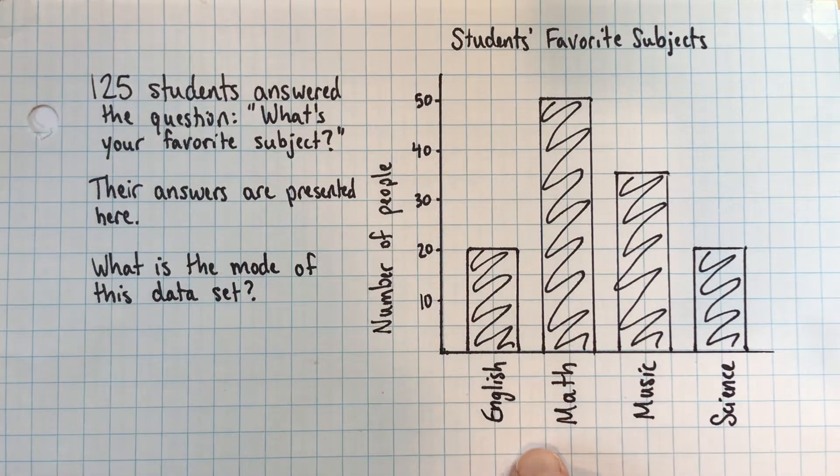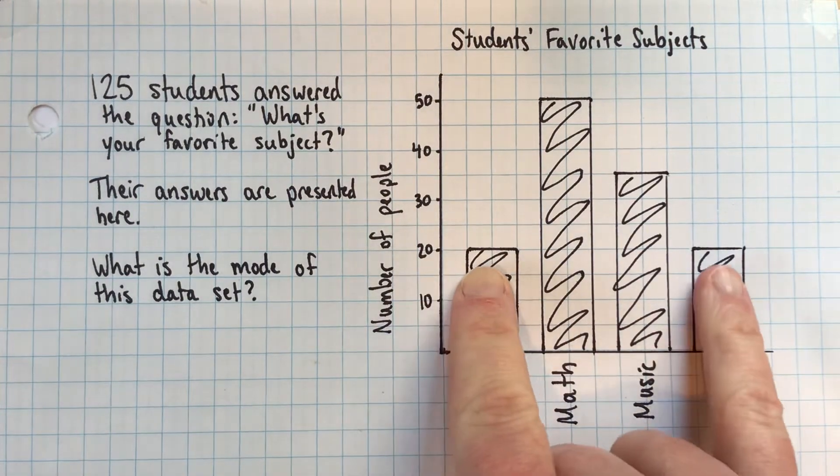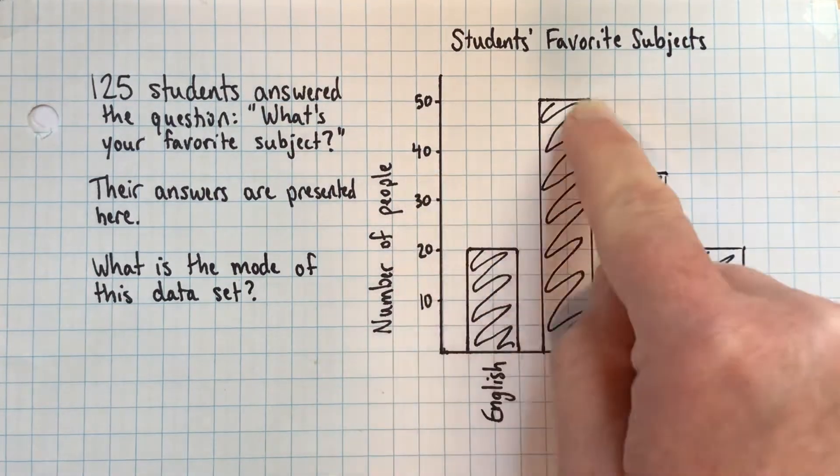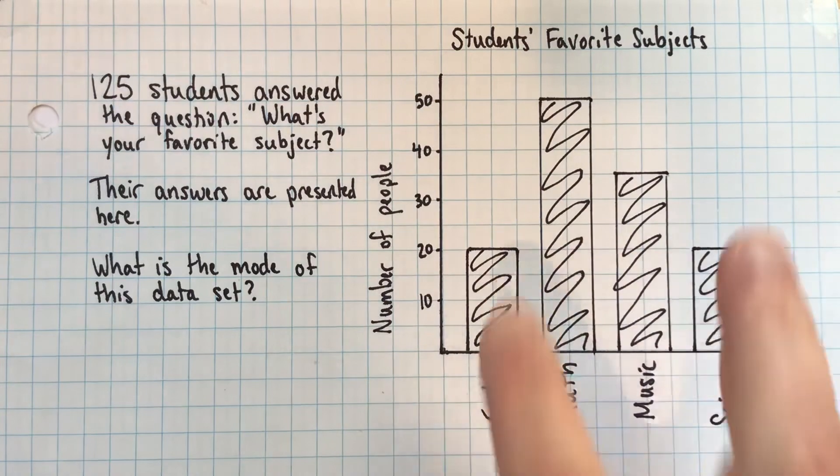The reason that a person would think 20 is they'd say, well, there are two answers that have 20 people. There is one answer with 35 and one answer with 50. So 20 seems like the most common.